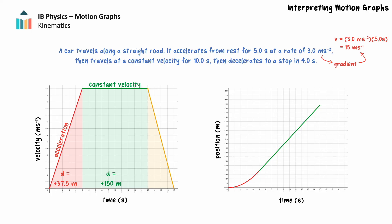The car has constant velocity in this segment, equal to the final velocity reached in the first segment. When drawing a position-time graph from a velocity-time graph, it's important to show continuity in the gradient from the first segment to the second segment. In the final 4 seconds, the car decelerates — the car's displacement is the area of the triangle, which is positive 30 meters. The position-time graph will be a downward curve that gets less steep with time and becomes horizontal to show the car has come to a stop. The final segment extends from 187.5 meters at 15 seconds to 217.5 meters at 19 seconds.